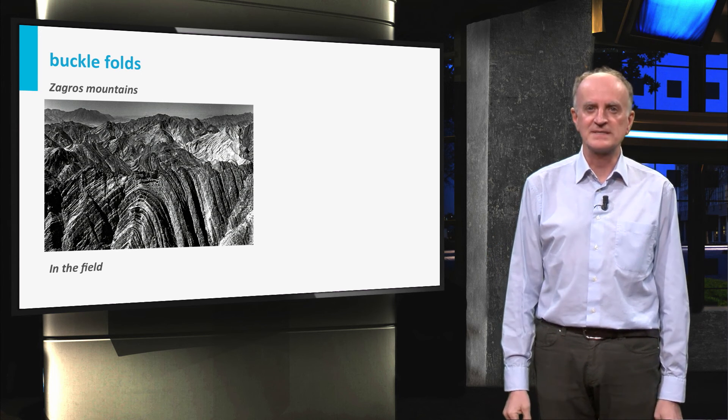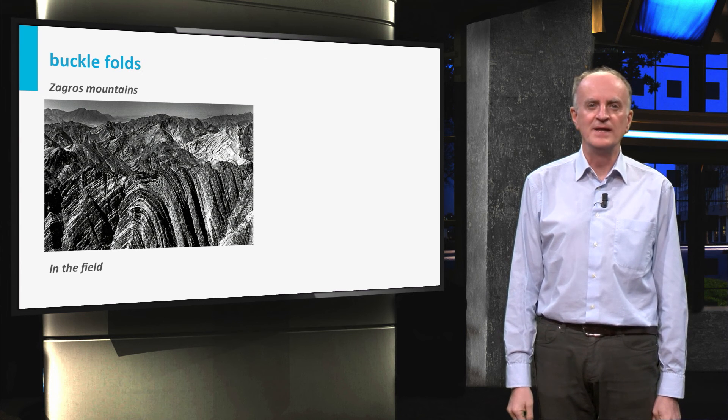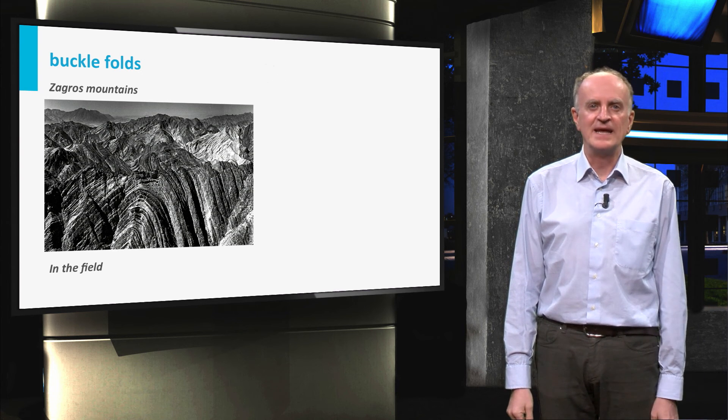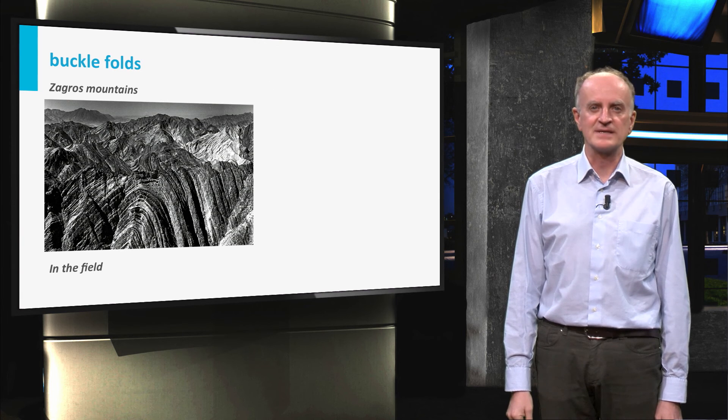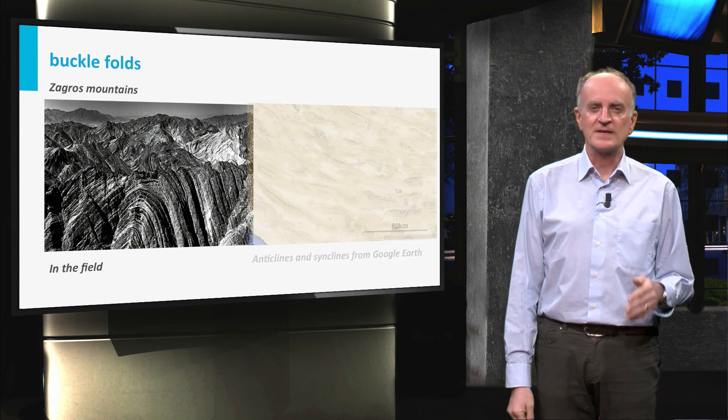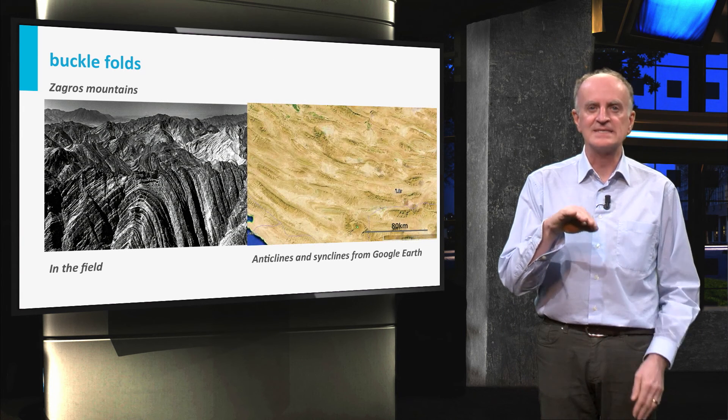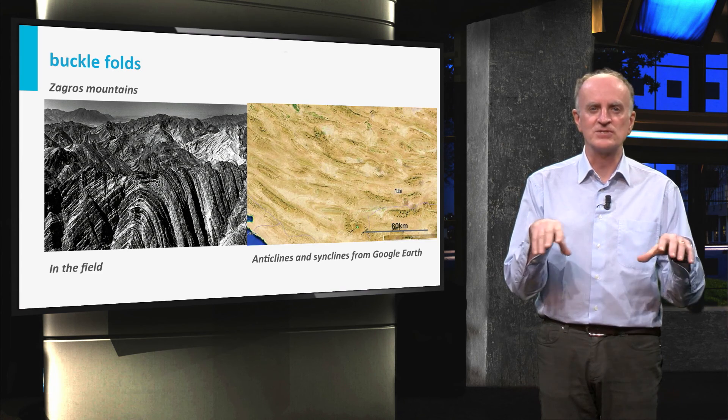This is the case for instance in the Zagros Mountains of Iran, the Salt Range in Pakistan and the Jura Mountains in Switzerland and France. In map view, you can see the succession of anticlines and synclines nicely following each other.